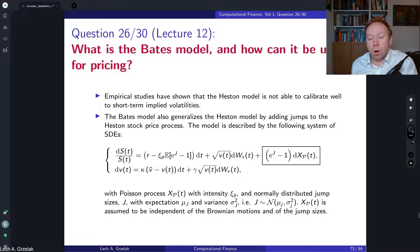We have a part which comes from the Poisson process and also some drift correction. This drift correction is related actually to this part and comes as the martingale correction. The derivations for this correction you can find in the lecture notes.